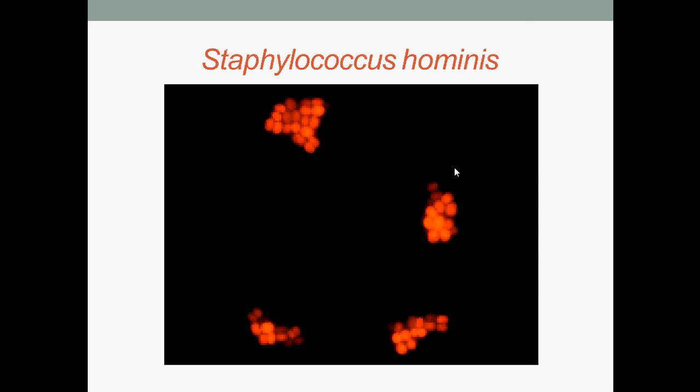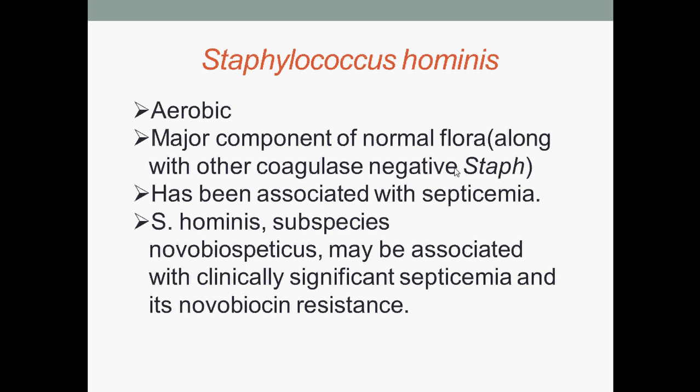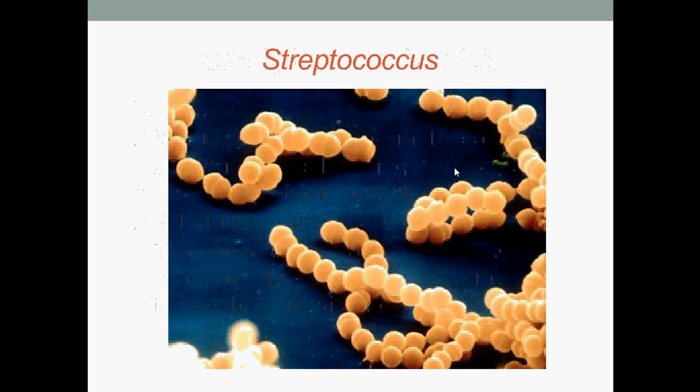Staphylococcus hominis under microscopic view. Staphylococcus hominis are aerobic. They are the major component of normal flora along with other coagulase negative Staphylococcus species. Has been associated with septicemia. Staphylococcus hominis subspecies novobiospaticus may be associated with clinically significant septicemia and is novobiocin resistant. That's all for today.